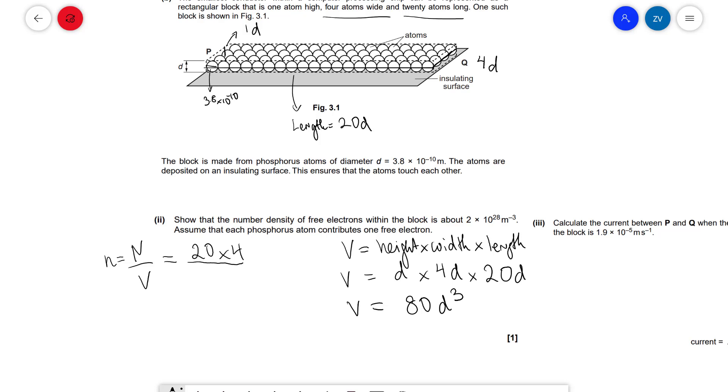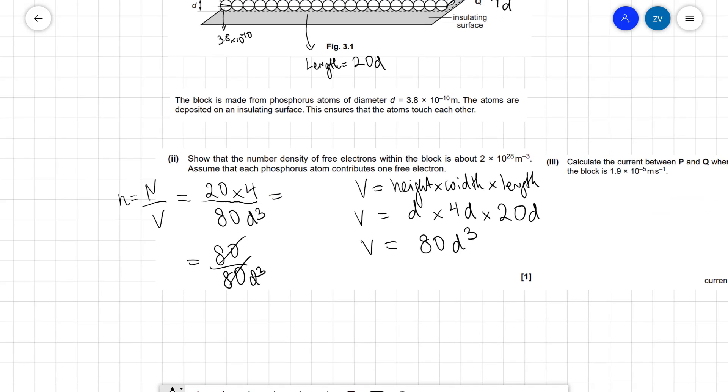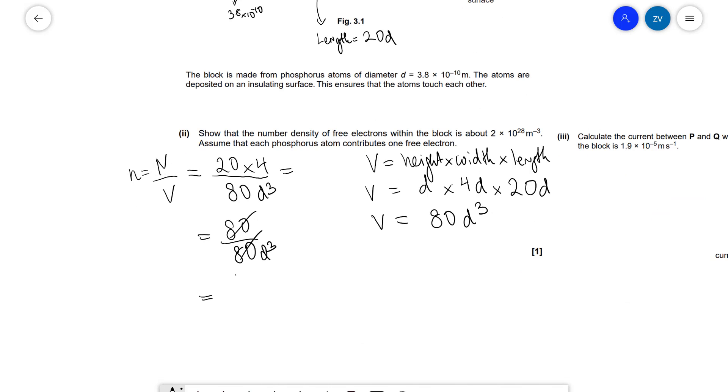And this is our volume which we can just plug in here, so it's going to be 80d³. So 20 × 4 is 80, of course, so it's going to be 80 over 80d³. The 80s are going to cancel out and what we're left with is 1 over d³.